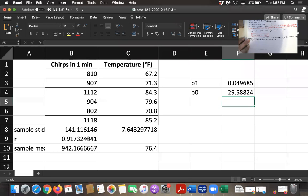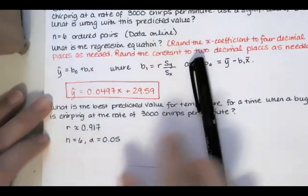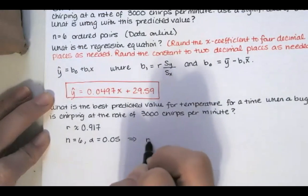So when I go to Excel, I see that this is my r value. So if we round to three decimal places, r is approximately 0.917. And we see we have one, two, three, four, five, six ordered pairs. So n is equal to six. And they asked us to use a significance level of alpha equals 0.05. So we're going to use the sample size and the alpha value to find the corresponding critical values of r.